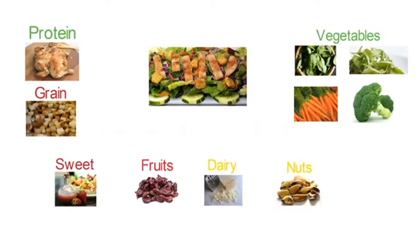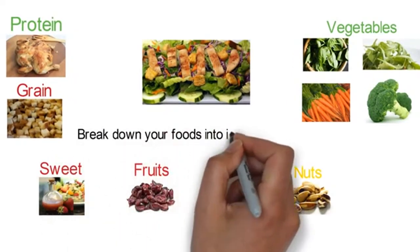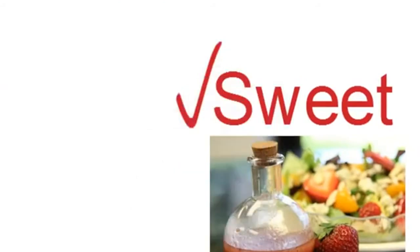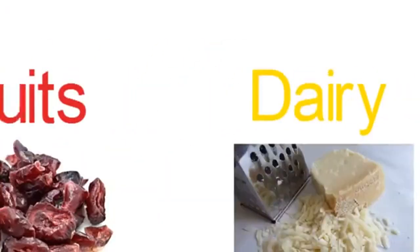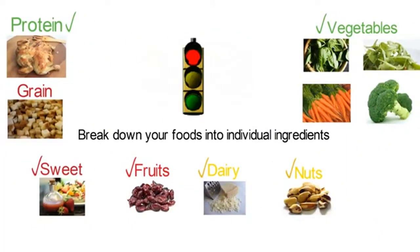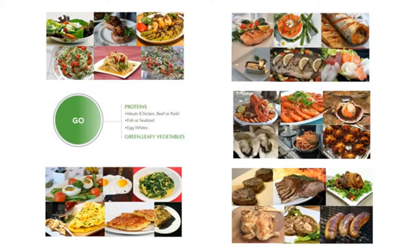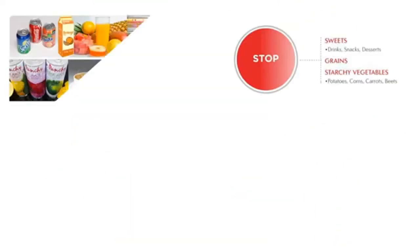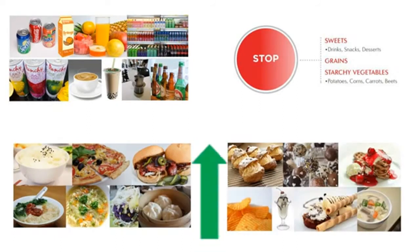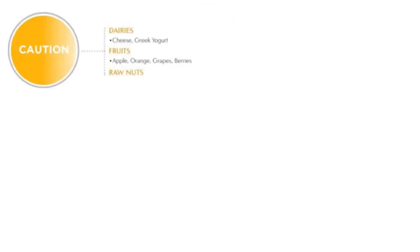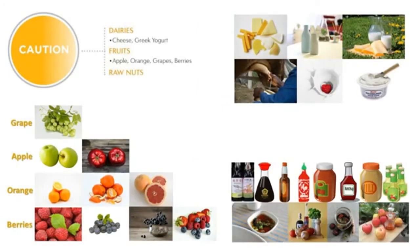In summary: when you look at a salad, first break down the food into its individual ingredients and group them — is it a sweet, a vegetable, a fruit, dairy, nuts, or a protein? Then ask what color light each item is. Have more of the green light foods, because those will lower your insulin level. Avoid the red light foods, because those will spike your insulin immediately. And be very careful with yellow light foods. Thank you for listening.